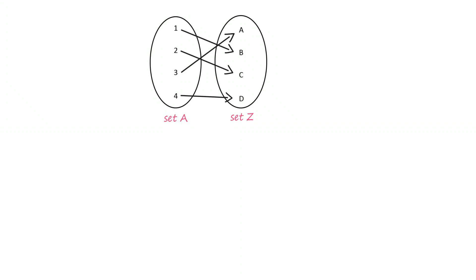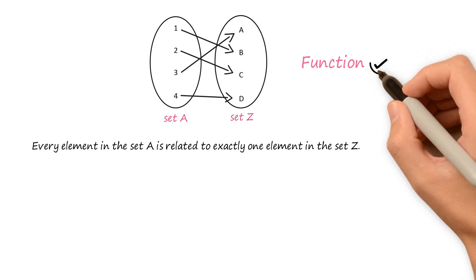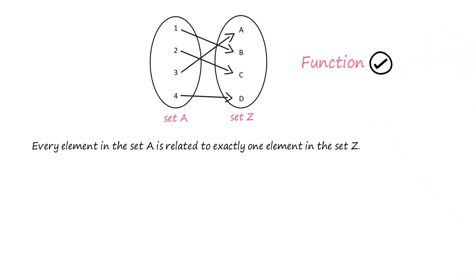Consider the sets A and Z related to each other as shown. Clearly, every element in the set A is related to exactly one element in the set Z. So the given relation is a function.